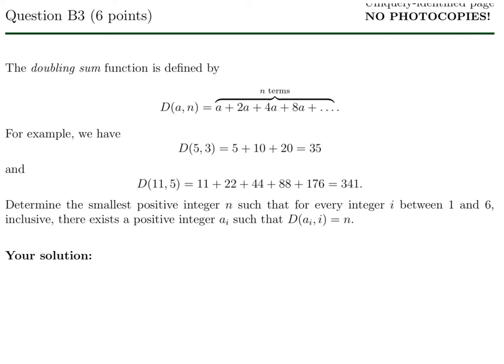The doubling sum function is defined by D of A, N is equal to A plus 2A plus 4A plus 8A and so on. For example, D of 5, 3 is 5 plus 10 plus 20, which is 35. And D of 11, 5 is 11 plus 22 plus 44 plus 88 plus 176, which is 341.